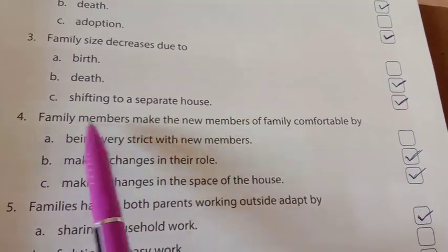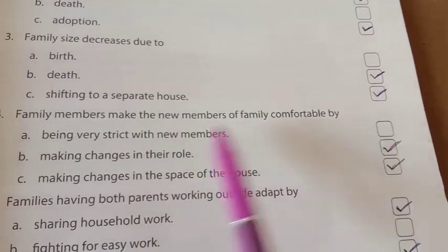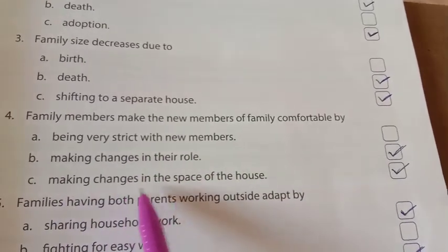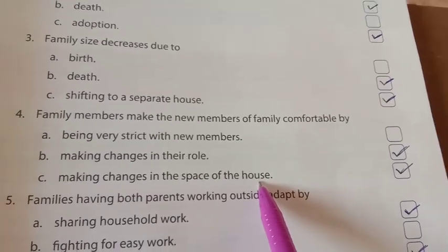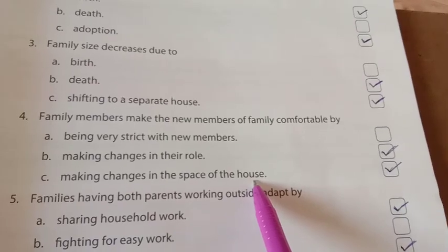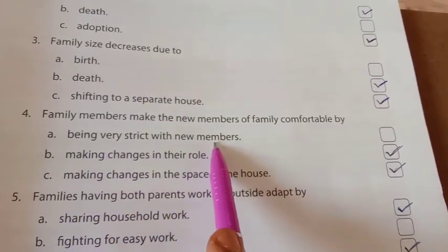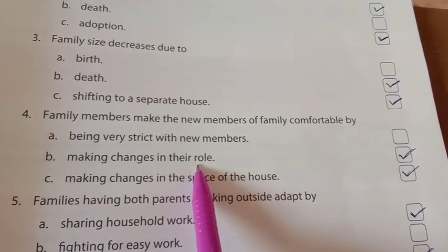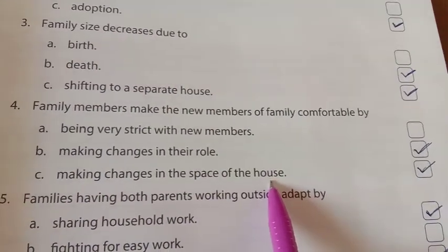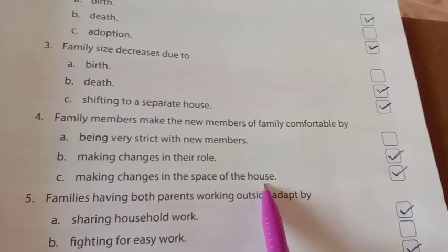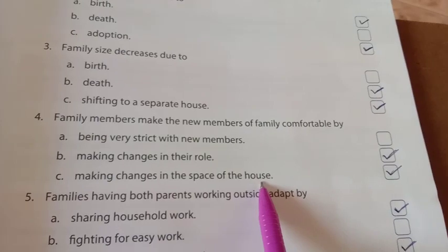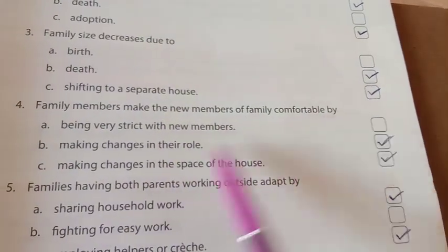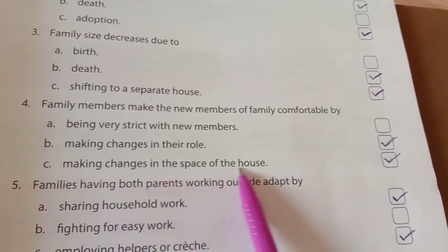Number four: Family members make new members of the family comfortable by A) being very strict with new members, B) making changes in their role, C) making changes in the space of the house. If your aunt gets married to your uncle and comes into your house, your parents take more responsibilities and make changes in the space of the home so she comfortably adjusts. So option B and option C are correct — tick the second and third boxes.